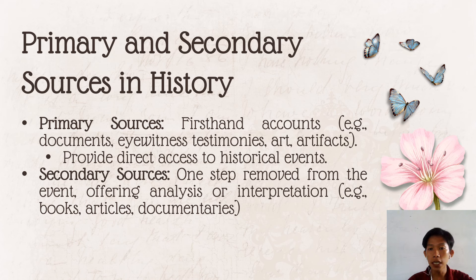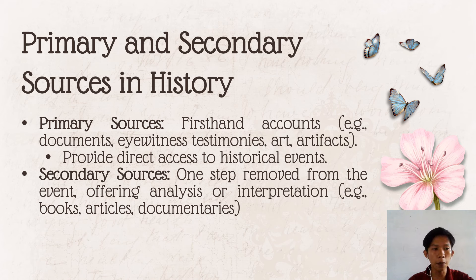Primary sources provide direct access to historical events — for example, a video or written account of an event. Secondary sources are one step removed from the event, offering analysis or interpretation. Examples include books, articles, and documentaries. Any account that is not a primary source — published research, newspaper articles, scholarly or popular books, reference books, textbooks, and other media — are typical secondary sources.